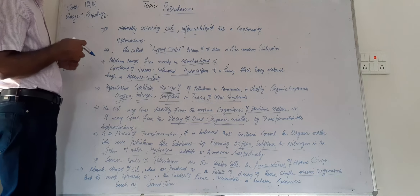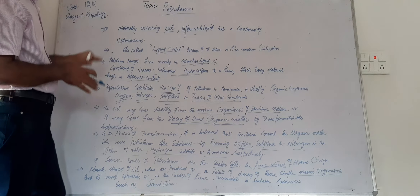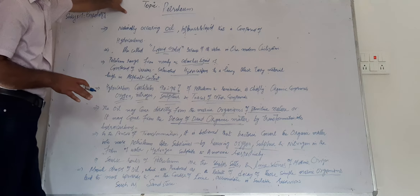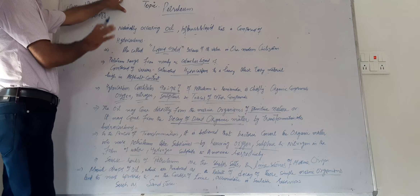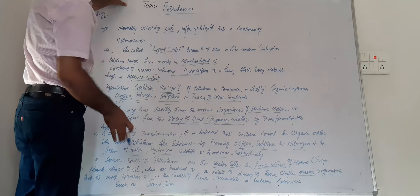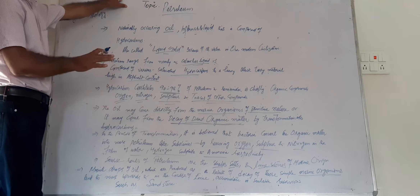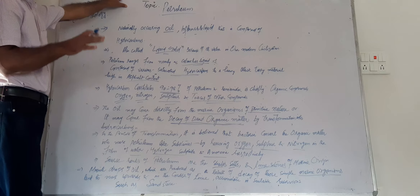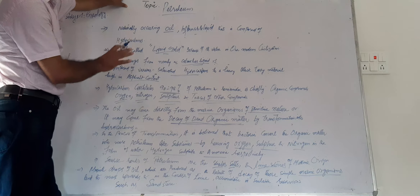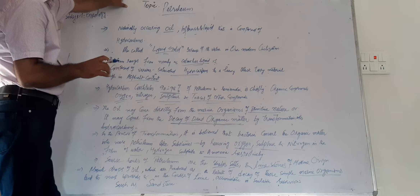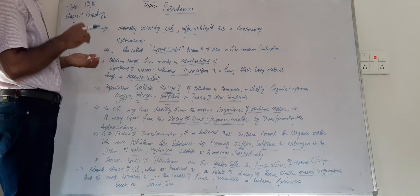The source rocks of petroleum are shales, silts, and limestones which have been developed and originated in the marine environment. These rocks — shales, silts, and limestones — are the source rocks of petroleum.